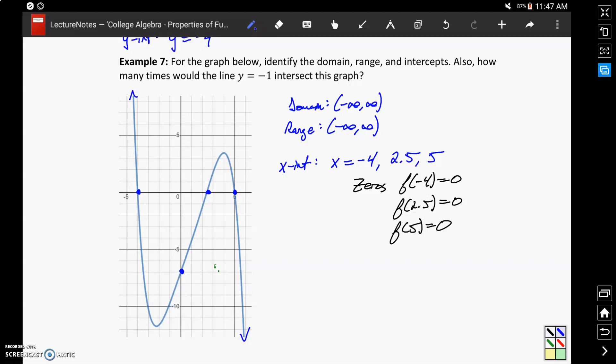And we have a y-intercept occurring at y equals negative 7, which in function notation corresponds to the idea that f of 0 is equal to negative 7.